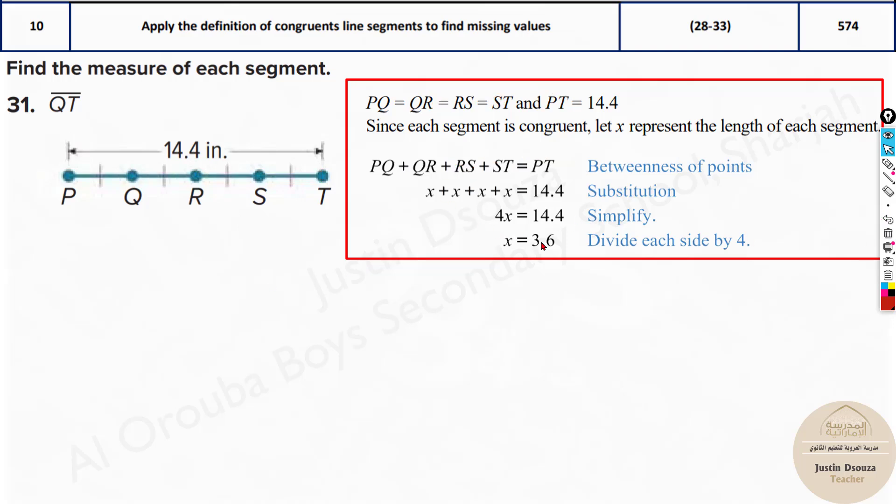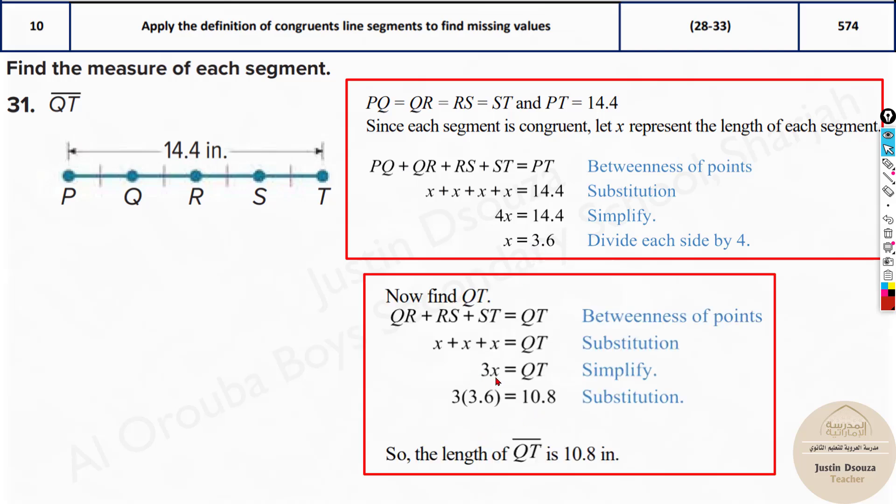Over here first you find X that is 3.6. This value the total length 14.4 divided by 4 is 3.6. Multiply 3.6 times 3 and you will get the answer 10.8. That is from Q to T.